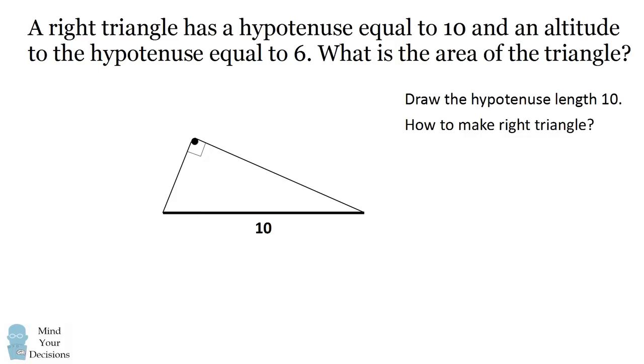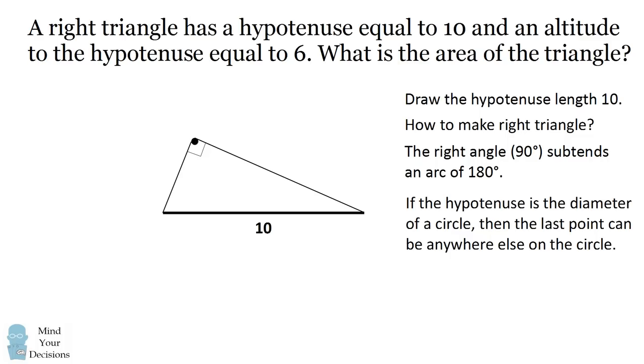Here's how we can figure it out. If the third vertex forms a 90 degree angle, then it's going to subtend an arc that's 180 degrees. So if we think about the hypotenuse as the diameter of a circle, then the third vertex can be anywhere else in the circle to form a right triangle. These are the only points that will form a right triangle with that hypotenuse of 10.